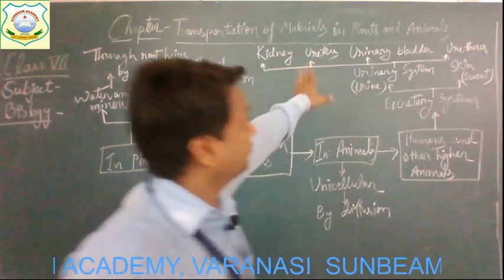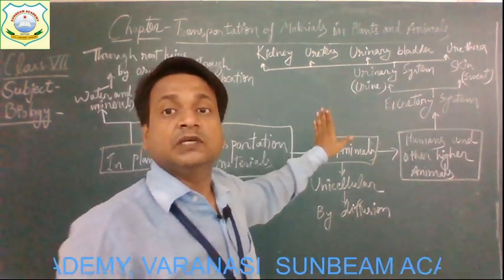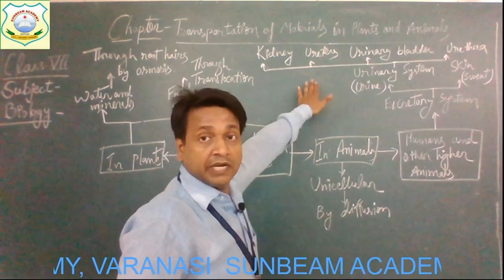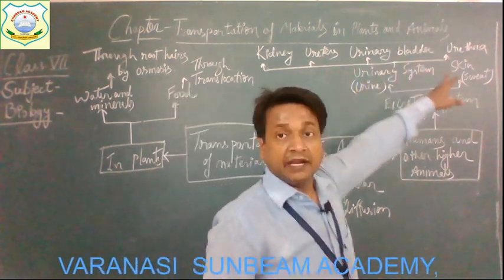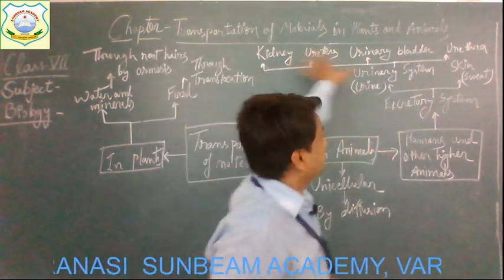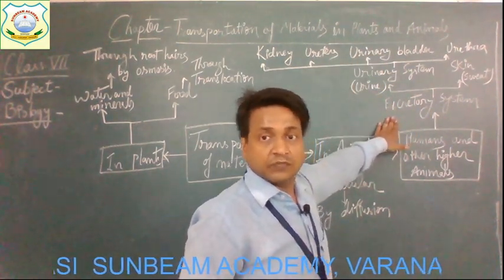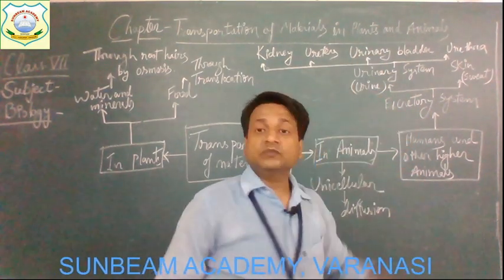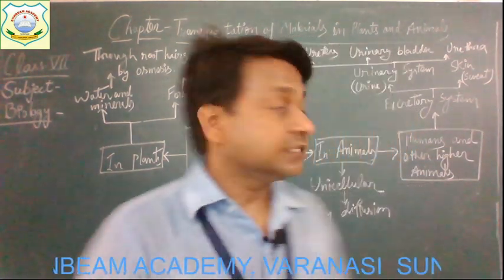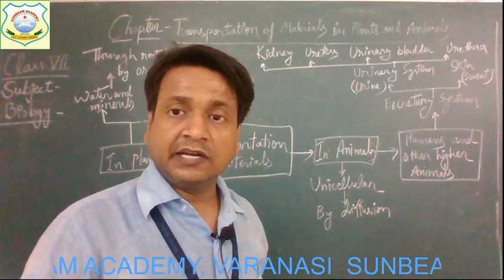These are the four different parts by which the urinary system is made up of: kidneys, ureters, urinary bladder, and urethra. This is known as the excretory system. Another system found in humans and other higher animals is the circulatory system.